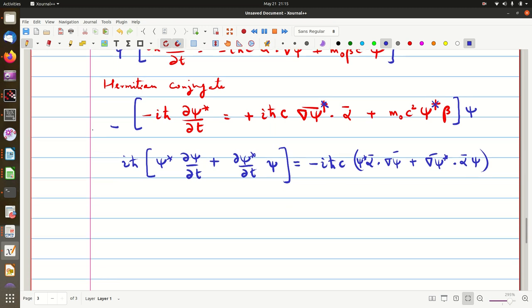Now we complete the squares. We get i ℏ gets cancelled on both sides. That goes away. So you get ∂/∂t (ψ* β ψ). So we are subtracting and adding. This will be equal to, okay, I can bring that to the side. So plus c times.